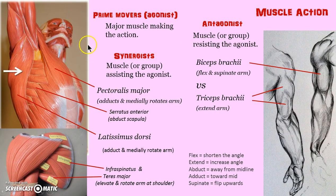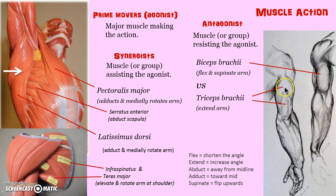How about actions? A lot of words here, but let's make sense out of it. Prime movers do the main action, and they are also called agonists. They fight against the antagonists — such as the bicep brachii, which has two heads and is going to flex and bring the hand up towards the shoulder. But its antagonist is the tricep brachii, which has three heads.